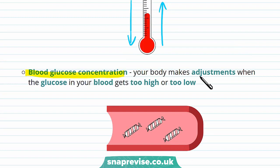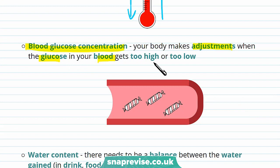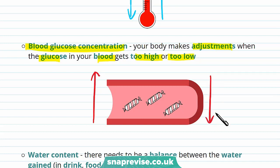It's also important to keep blood glucose concentration constant. Your body makes adjustments when the glucose in your blood gets too high or too low. For example, when you eat a large meal, your blood glucose concentration might increase, and your body acts to then decrease this blood glucose concentration. Otherwise, your body might become damaged.